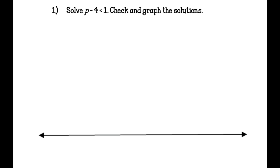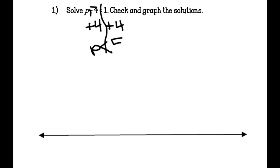Solve P minus 4 is less than 1. Draw the line and add the opposite. To get rid of negative 4, add positive 4 to both sides — what you do to one side, you must do to the other. So P is less than 1 plus 4, which is 5. On the graph I have 4, 5, and 6. I draw an open circle on 5 and shade to the left, since P is less than 5.